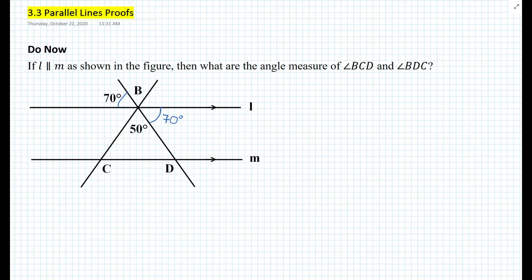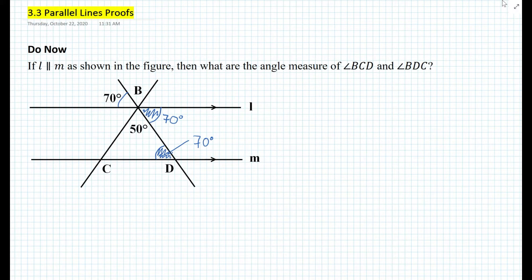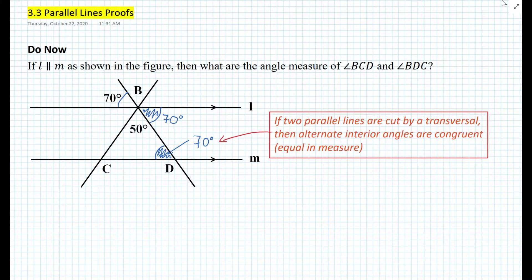Since we have this to be 70 degrees, then what can we say about this angle? Well, this angle also must be 70 degrees. Why is that 70 degrees? Because these two angles here are the alternate interior angles. We learned the theorem in the previous YouTube video that if two parallel lines are cut by a transversal, then alternate interior angles are congruent, or equal in measure.